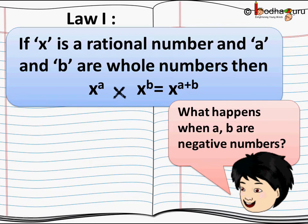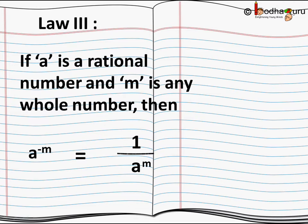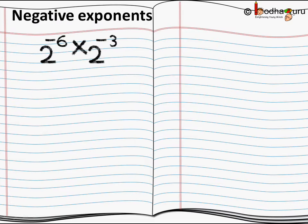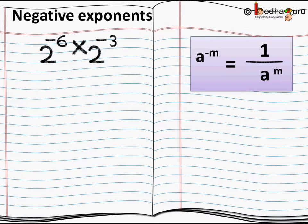Now you might think: what happens when a and b are negative numbers? If you remember the third law of exponents, if a is a rational number and m is any whole number, then a to the power minus m is actually equal to one divided by a to the power m. So now let us look at negative exponents: two to the power minus six multiplied by two to the power minus three. Here we see both powers are negative. Using this law, a to the power minus m equals one divided by a to the power m.